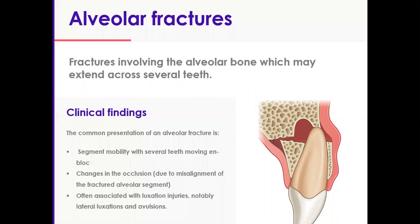It is not a jaw fracture or a Lefort type injury. So make sure you complete your systematic examination. Check for other signs such as buccal sulcus bruising beneath the zygomatic arch, or for bleeding from the wisdom teeth — it may suggest an angle of the mandible fracture. Check for orbital bruising, depression of the zygoma, and check the nose, nasal bridge, and facial asymmetry.